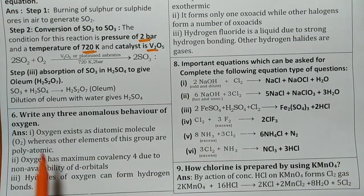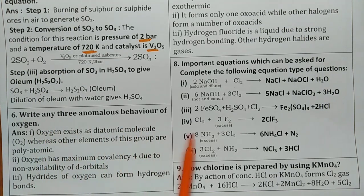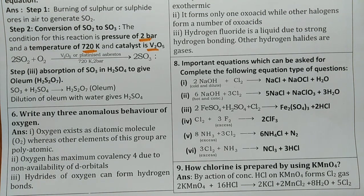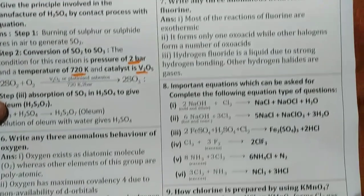Then the sixth one three anomalous behavior of oxygen. Remember similar to nitrogen. Oxygen exists as diatomic whereas others are polyatomic. Oxygen has maximum covalency 4 due to non-availability of d orbital. Hydrides of oxygen can form hydrogen bond. Like nitrogen similarly oxygen also same thing. Simple question practice.